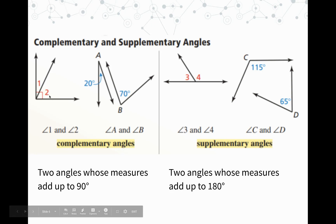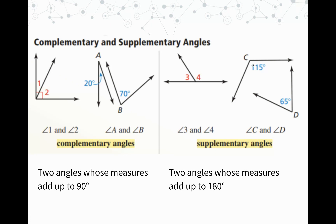Notice that complementary angles can be separate from one another — it doesn't matter, those are still complementary. Same thing with supplementary angles — they can be sticking together or separated. Another important thing: supplementary means exactly two angles whose measures add up to 180. If we have three angles adding up to 180, those are not considered supplementary. Remember, these are angle pair relationships, meaning two angles — very important to remember.